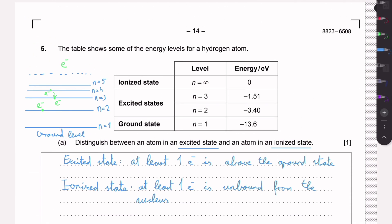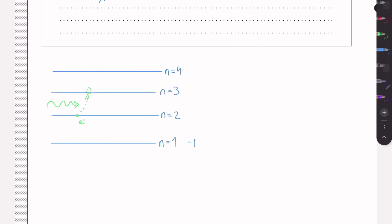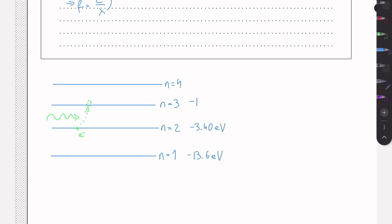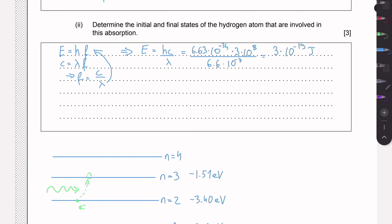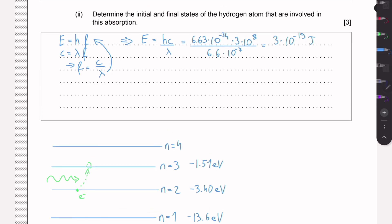We were given the energy levels for n=1, 2, and 3, so the transition is definitely somewhere between these three. Writing them out: n=1 is −13.6 eV, n=2 is −3.4 eV, and n=3 is −1.51 eV. We calculated energy in joules, but all these values are in electron volts, so we need to convert.